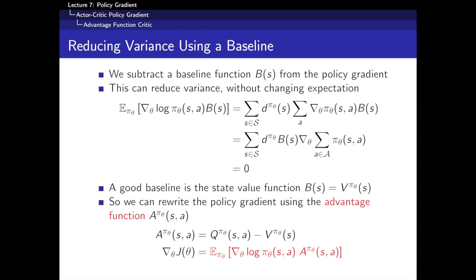Let's understand this intuitively. The advantage function tells us how much better than usual a particular action A is. The score tells us how to adjust our policy so as to achieve that action A. So if the advantage is ever positive — if we do better than usual using action A — the score tells us how to move in the direction that achieves that gain. If it's ever negative, we move in the opposite direction, away from that particular action. This is always pushing the policy parameters towards situations where you do better than usual.